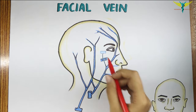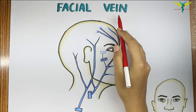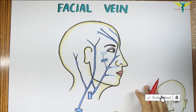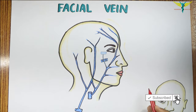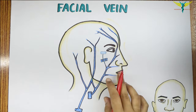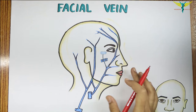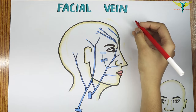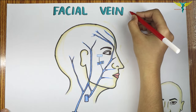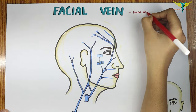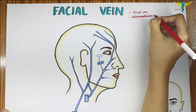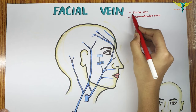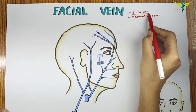In this video let's learn about the facial veins. The facial vein is very important to know because of the presence of the dangerous area of the face. The venous blood from the face is mainly drained by two veins: the facial vein and the retromandibular vein.